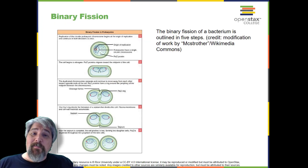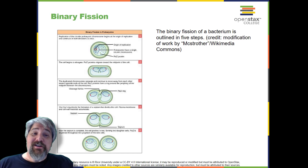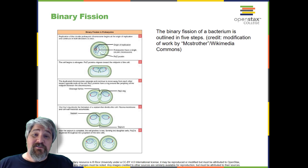Prokaryotes, such as bacteria, propagate by binary fission. For unicellular organisms, cell division is the only method to produce new individuals. In both prokaryotic and eukaryotic cells, the outcome of cell reproduction is a pair of daughter cells that are genetically identical to the parent cell. In unicellular organisms, daughter cells are individuals. To achieve the outcome of identical daughter cells, some steps are essential: the genomic DNA must be replicated and then allocated into the daughter cells, and the cytoplasmic contents must also be divided to give both new cells the machinery to sustain life.